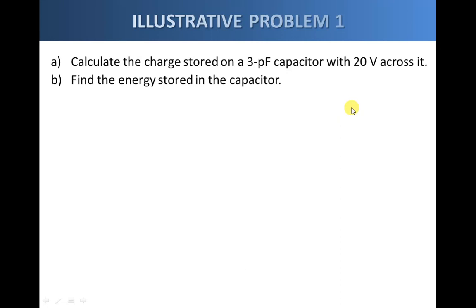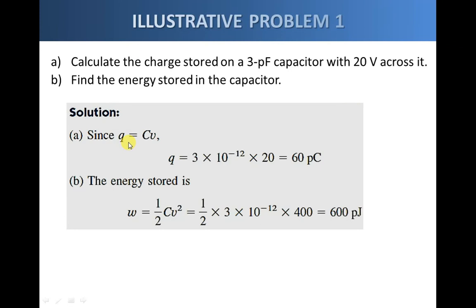To get the charge stored, we simply use the relationship between charge and voltage: Q equals C times V. Substituting the values for C and V, we get 60 picocoulombs. For the energy stored, we apply the formula one-half C V squared using the voltage across the capacitor, and we get 600 picojoules.